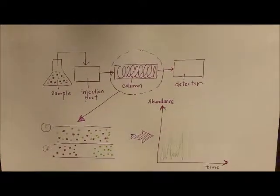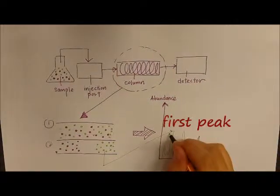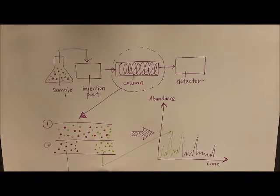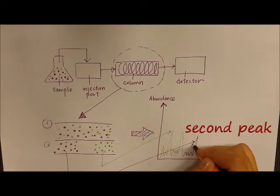Usually there will be a tiny peak before the first peak which represents the solvent in which the sample dissolves. The second peak then represents the second compound in the sample.